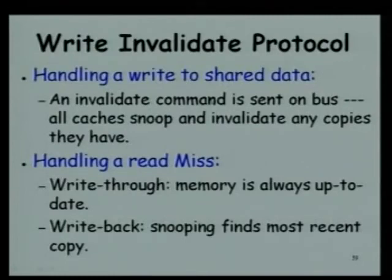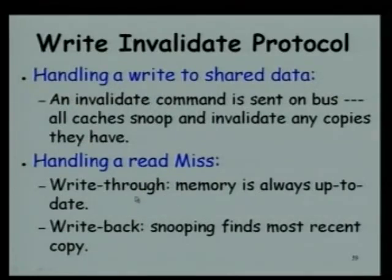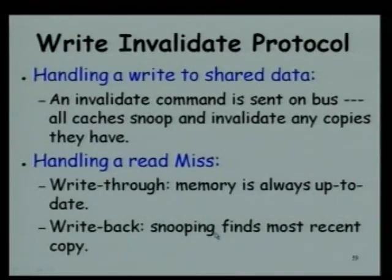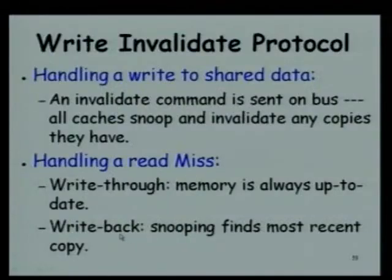For a read miss, it would be different for a write-through and a write-back cache. In a write-through, it is very simple because memory is always up to date - it just reads it. Whereas in a write-back, the one that is having the latest copy would have to snoop, find out, and then send that copy. A read request by another processor should be known to the processor that is currently holding the copy - it should find out by snooping and then send the copy.